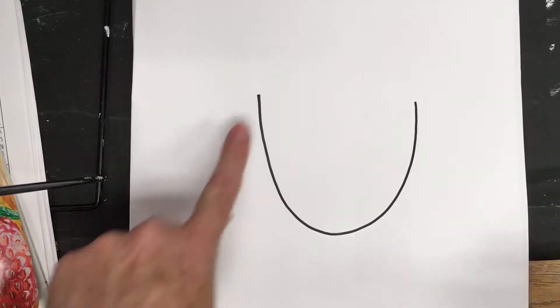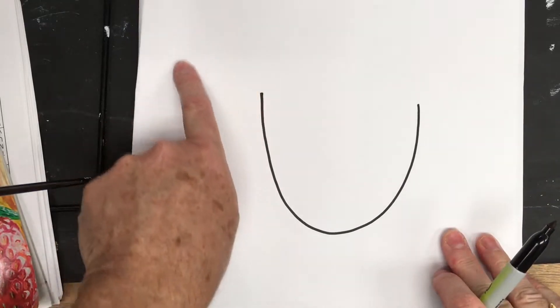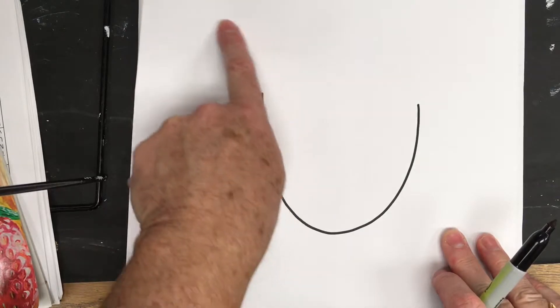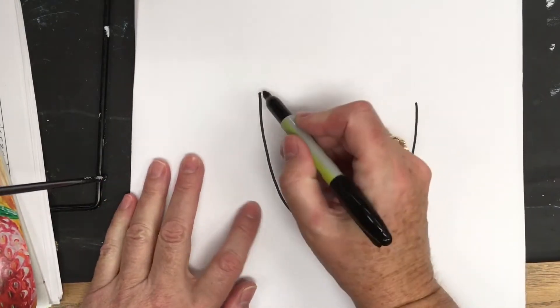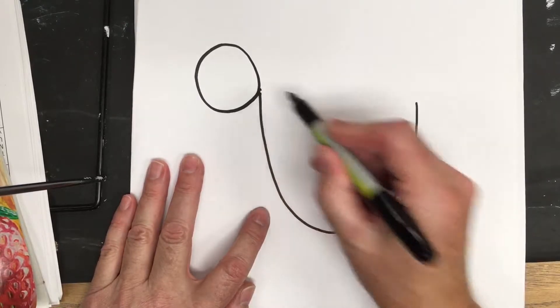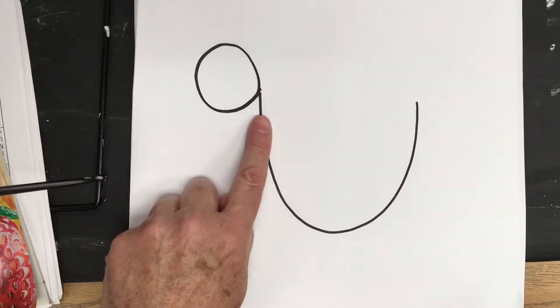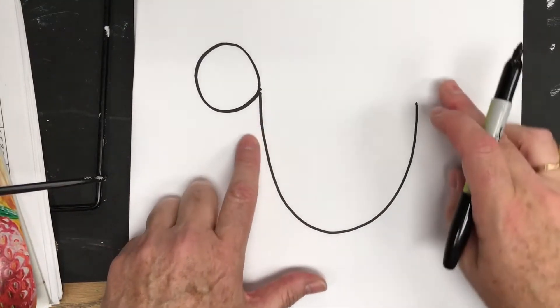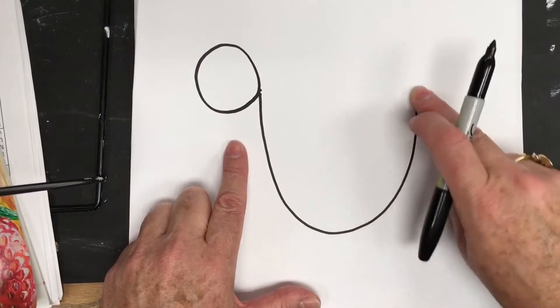Now we're going to take at the top of the letter U and make a nice large circle. So watch what I'm going to do. I'm going to come up, around, and back down. You want the circle to be in proportion with the letter U.